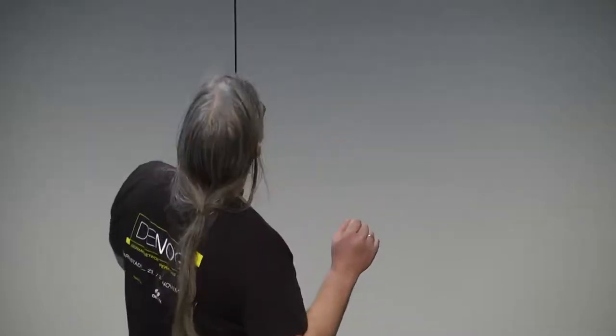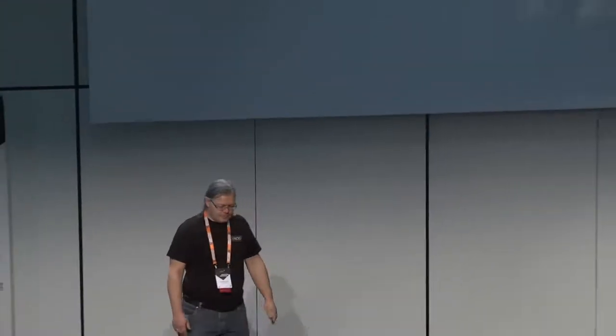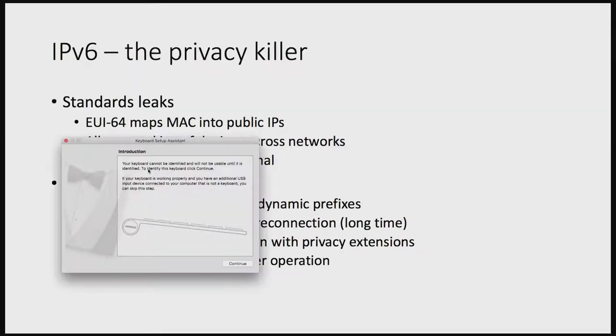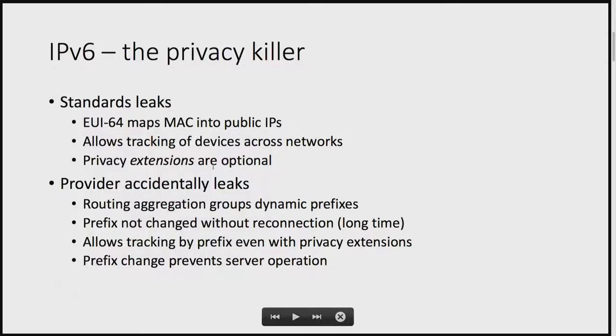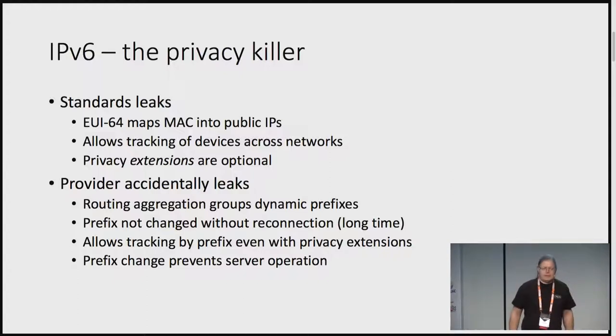Let's get back to the root of all evil. There are two parts because IPv6 is the source of all privacy problems. The first one is the standard. The standard introduced the main problem: it includes the MAC address in the public visible IP address, so everybody knows the device which is talking on the internet, and makes it very easy to track users.